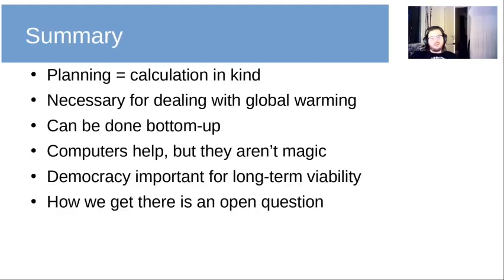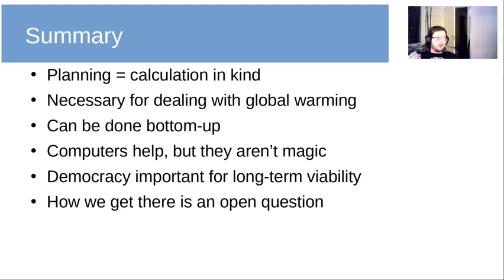In summary: planning is calculation in kind. Planning is necessary for dealing with global warming. We can do planning in a bottom-up fashion where computers are useful, but we should remember that computers aren't magic — computers aren't people. This is where democracy comes in, and democracy is very important for the long-term viability of the system. Really, how we get there is an open question, and people on the left all have different ideas about how we get there.